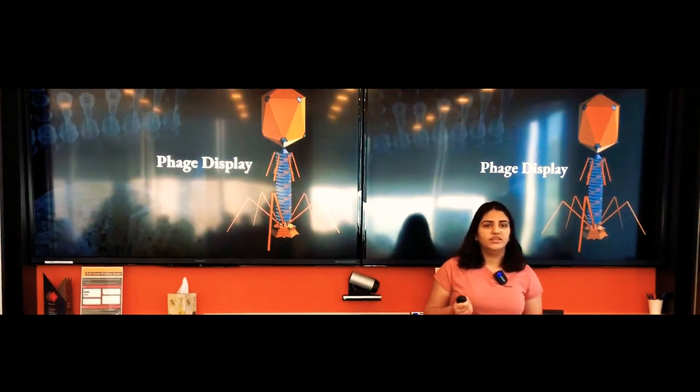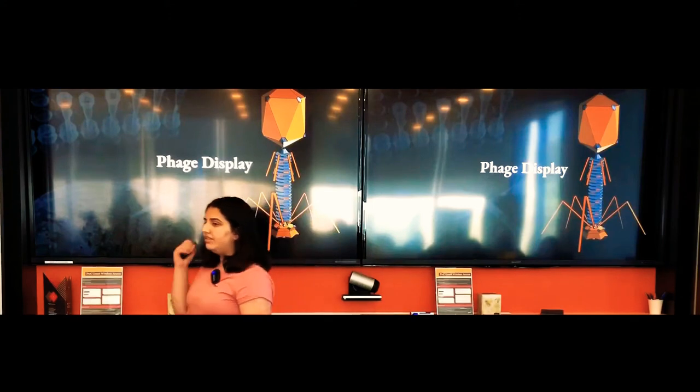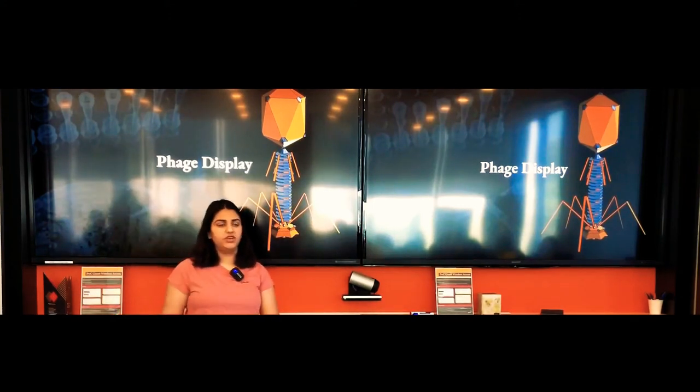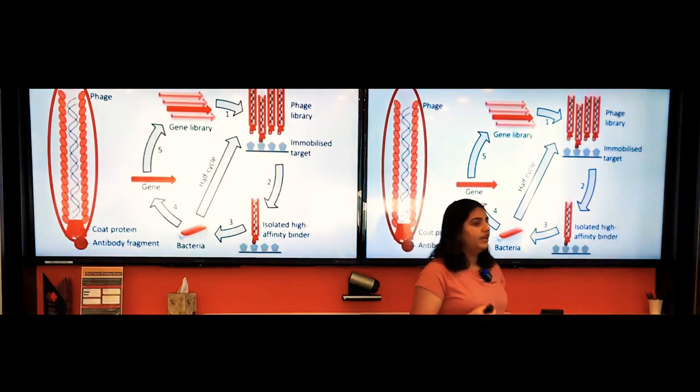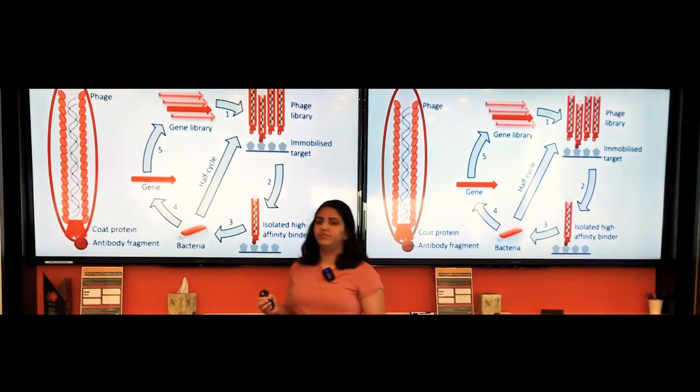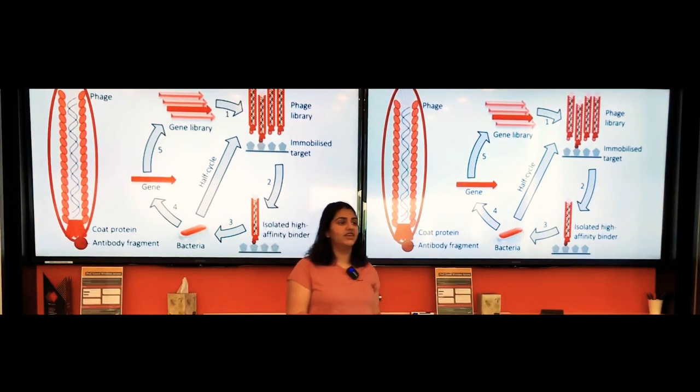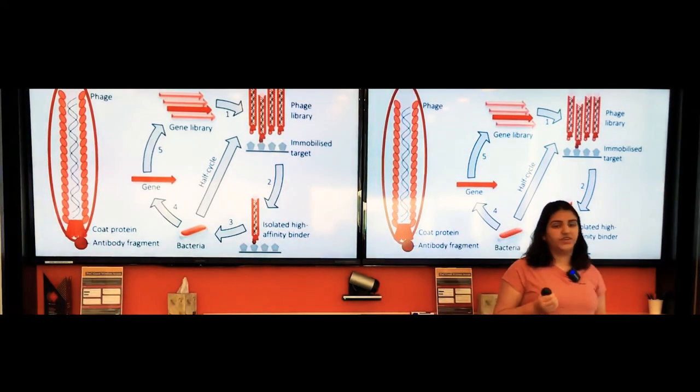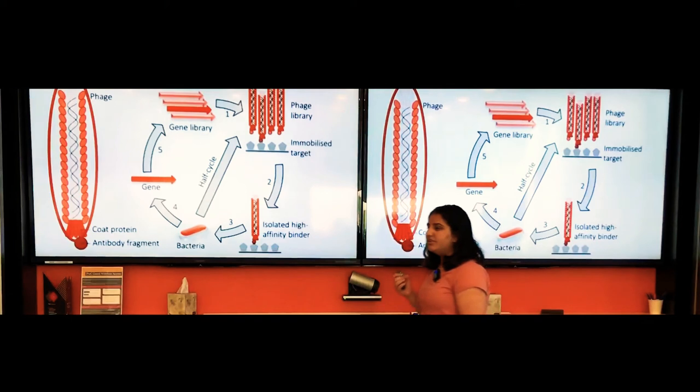One technique used for food pathogen detection is called phage display, and this is super important because this way we can find the corresponding phage to the food pathogen. For simplicity, let's take an apple. Our target protein will be protein 1, and the gene that encodes it is gene 1. In this technique, gene 1 is inserted into a phage coat protein.